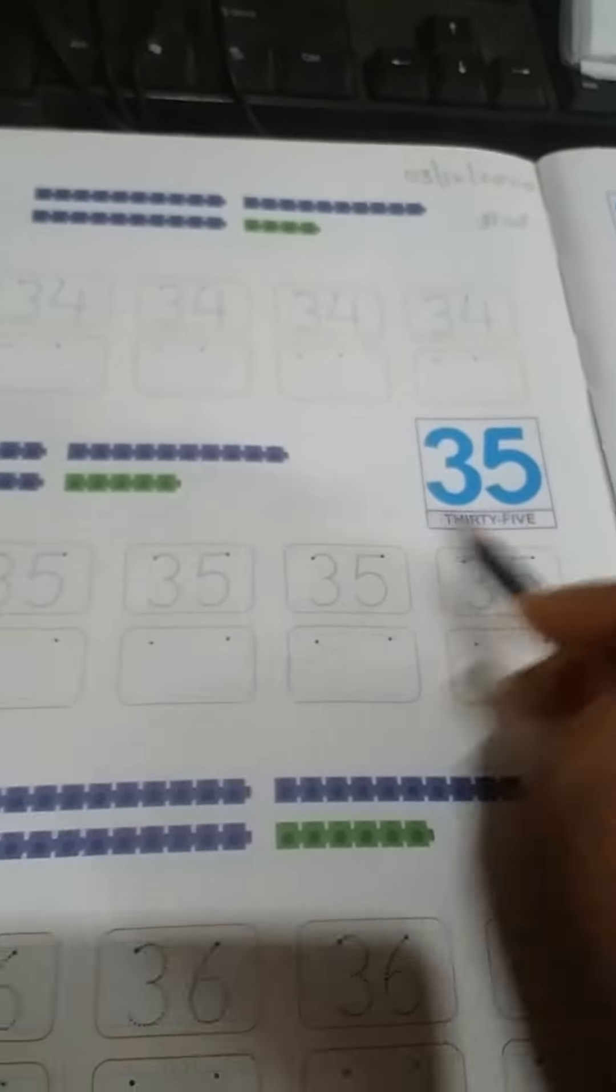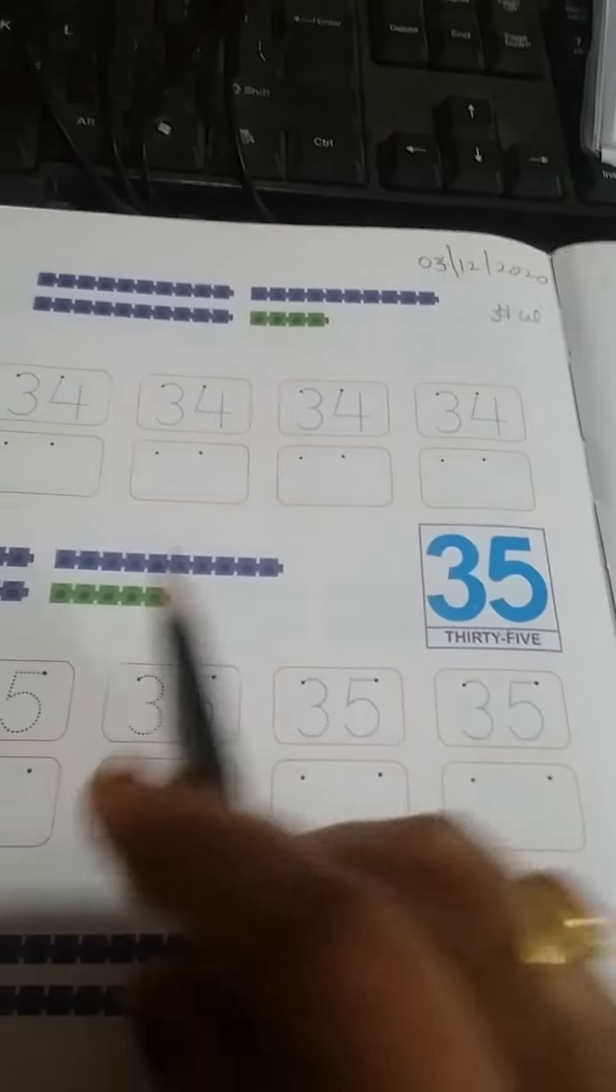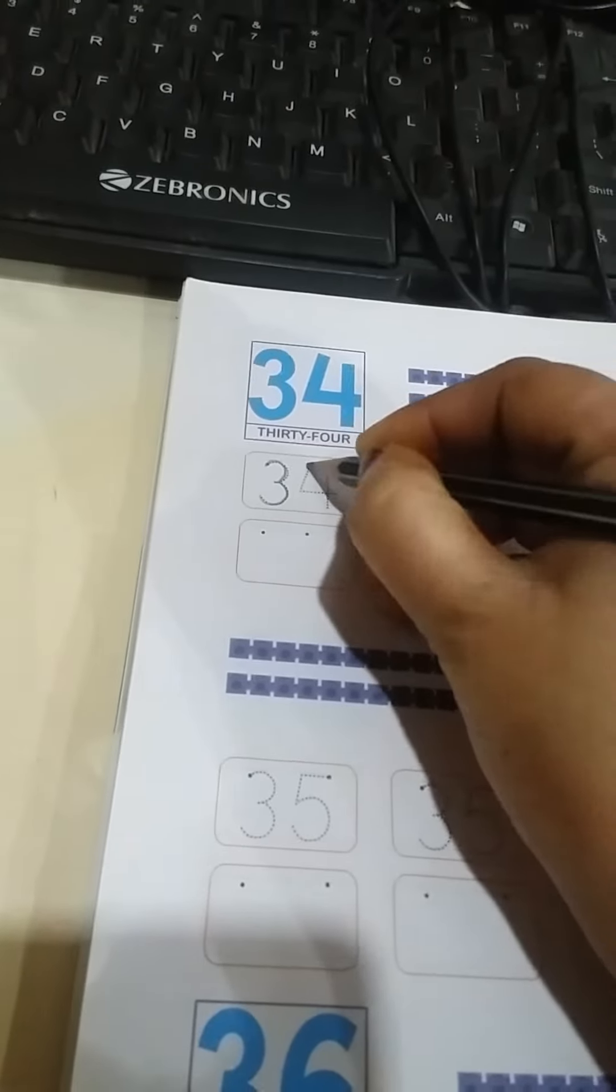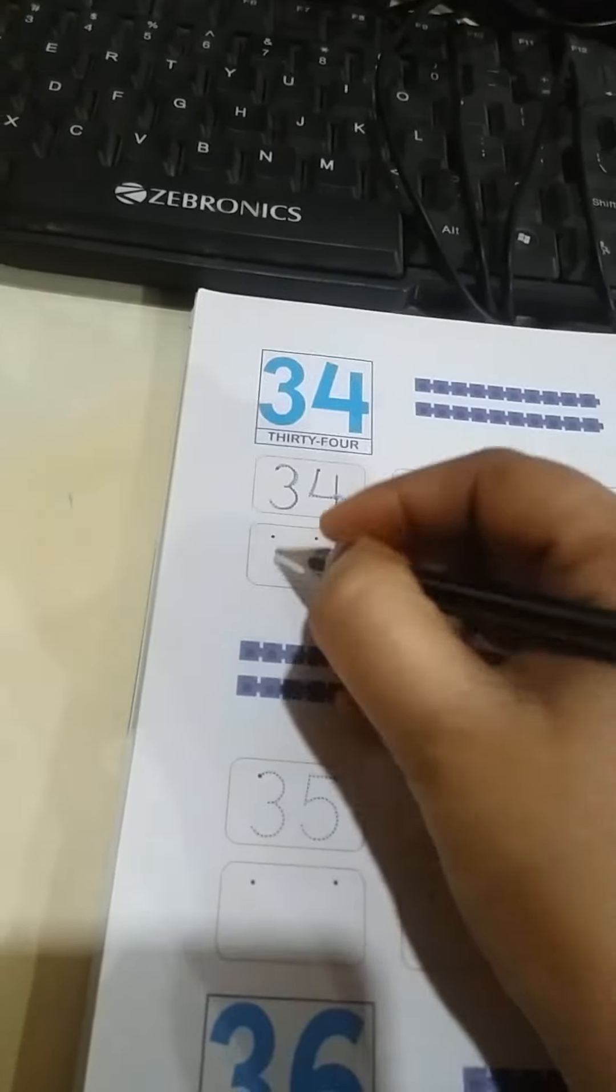34, 35, 36, 37, 38, 39. In sabhi numbers ki aapko tracing karna hai. Aapko likhna hooga. Okay? You have to trace like this. Then after you have to write here.